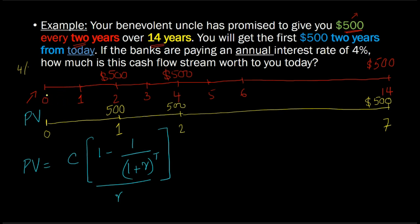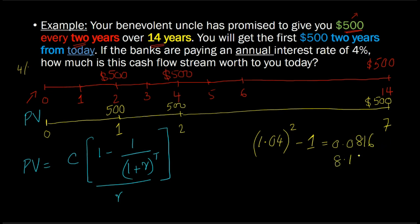The opportunity cost over this one two-year interval is: 1.04 squared minus 1, which equals 0.0816, or 8.16%. Over this one time interval, the rate of return you could have earned is 8.16% — 4% in the first year, 4% in the second year, plus an extra 0.16% from earning 4% on the original 4%.